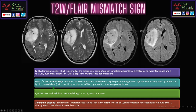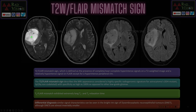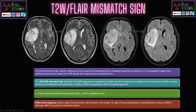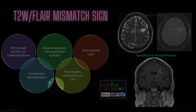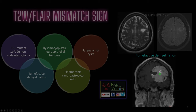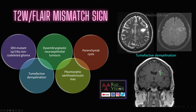Next, what is the T2 FLAIR mismatch sign? There is a lesion which is hyperintense on T2 but heterogeneously hyperintense on FLAIR and surrounded by a peripheral hyperintense rim. The difference in signal intensity between T2 and FLAIR is called the T2 FLAIR mismatch sign. It is pathognomonic for IDH mutant 1p/19q non-co-deleted gliomas with specificity as high as 100%. However, it can also be seen in DNETs, parenchymal cysts, tumefactive demyelination, and pleomorphic xanthoastrocytomas.